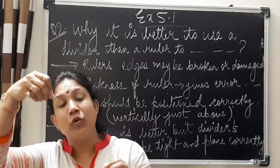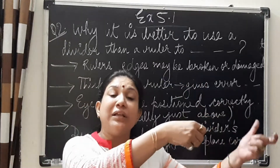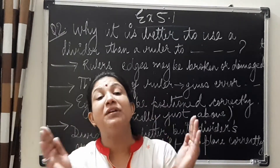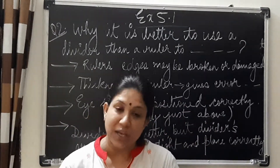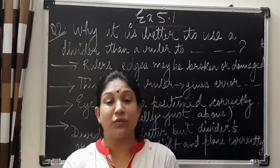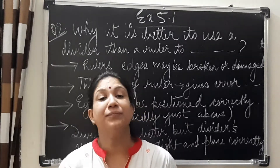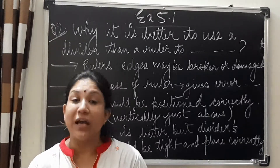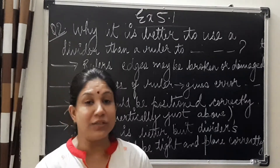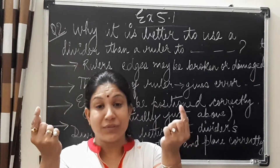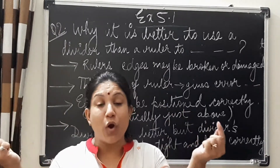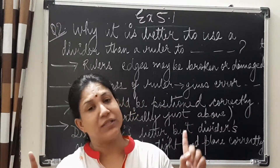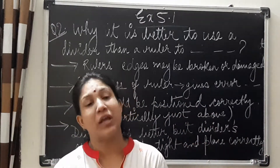When you remove the divider and go to the other line segment to place it, if the arms are too loose, the measurement may get changed. So you should screw it tightly so the arms do not shift until you intentionally change them. Also, the arm tips where you place them on the endpoints of the line segment should be properly placed.